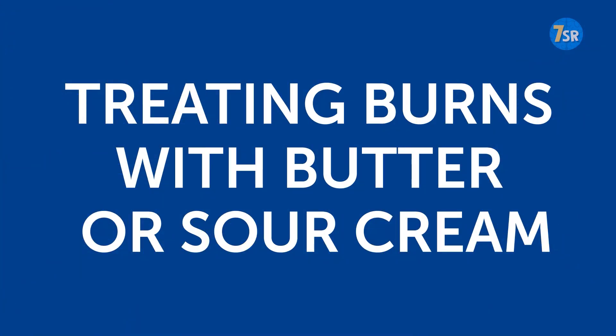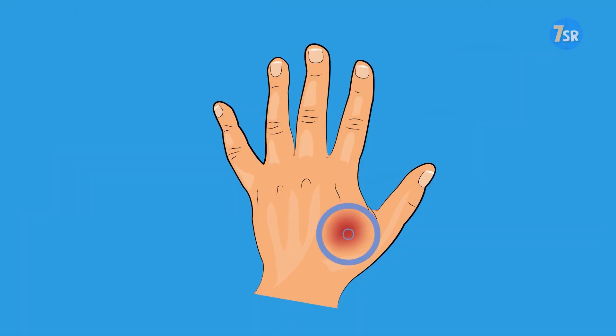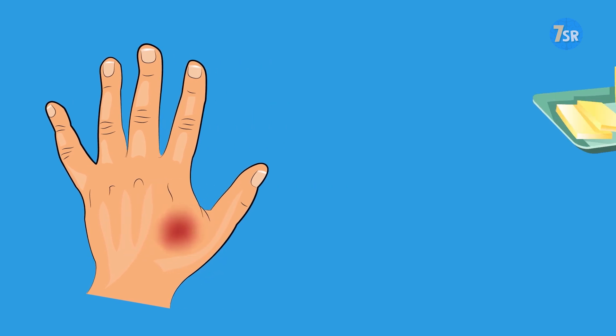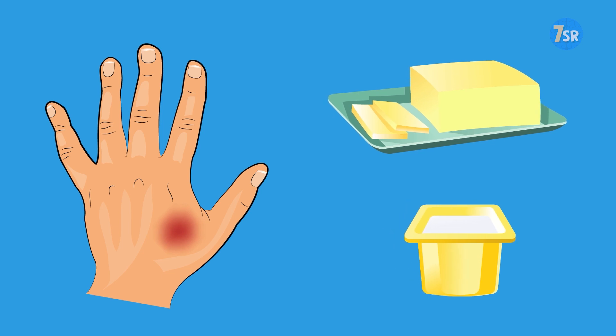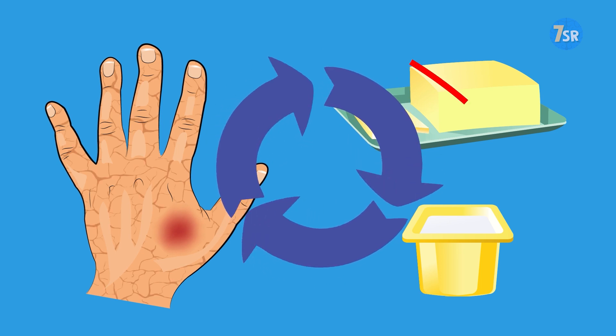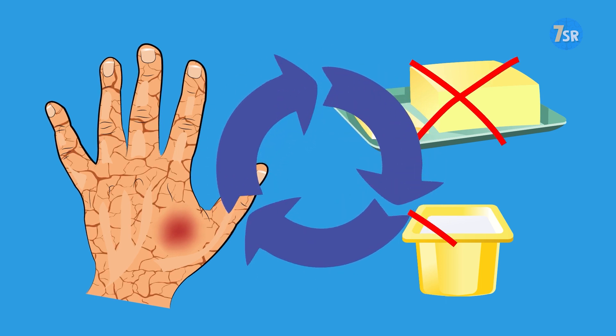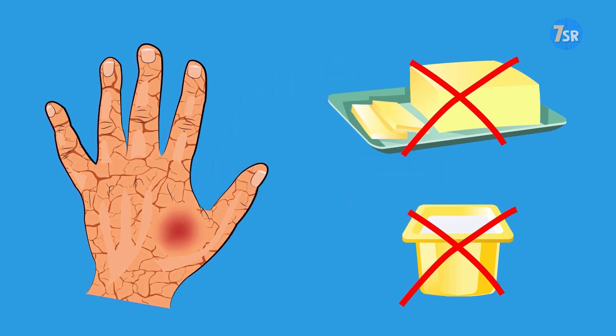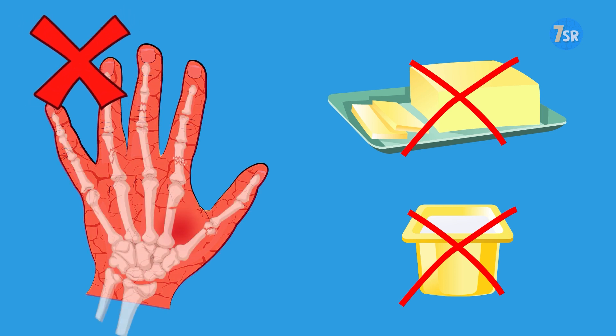Treating burns with butter or sour cream. Many people believe that this method is effective only because it relieves pain. But why do butter and sour cream make you feel better? The thing is, we keep them in the fridge, so when we put them on a burn, they're cold. The danger is, though, that butter and sour cream dry your skin and disrupt thermal exchange. This results in heat having nowhere to go but deeper into the skin, causing even more damage.